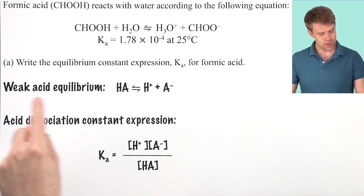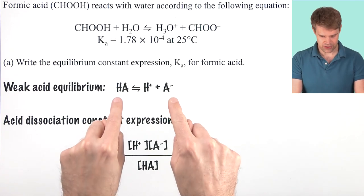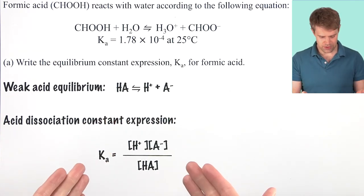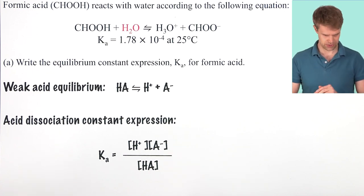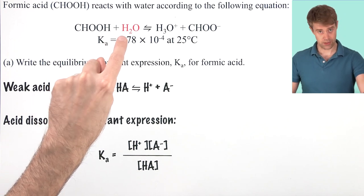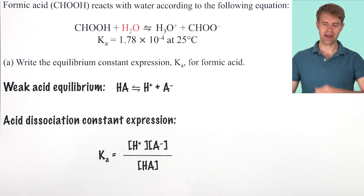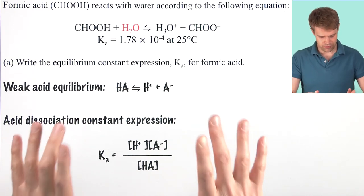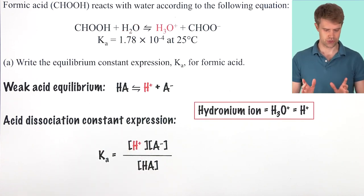So for any weak acid that dissociates according to this equation, the equilibrium expression will be based on this setup. Let's take a look at the parts here. Remember that H2O is a liquid, so it doesn't appear in the equilibrium expression. And the AP exam actually gives you this Ka formula, this sort of general setup on the equations page. And it also gives you the KB expression for base questions too.